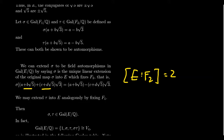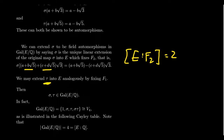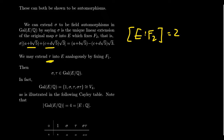Now tau — which was a map from F₂ to F₂ — can be extended up to E by leaving F₁ fixed. So instead of tau fixing just Q, it fixes all of F₁, by analogy with what we did for sigma. We've now constructed two automorphisms, sigma and tau, that both belong to the Galois group of E over Q. Since sigma fixes F₂ and Q lives inside F₂, sigma fixes Q. And since tau fixes F₁ and Q lives inside F₁, tau fixes Q as well.